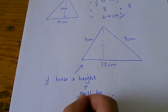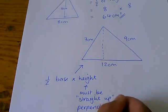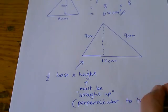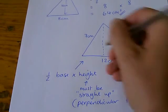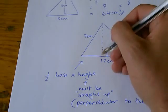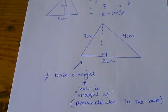What we call perpendicular, which means at right angles, to the base. And, since in this question we're not given the height of the triangle, we can't use this formula.